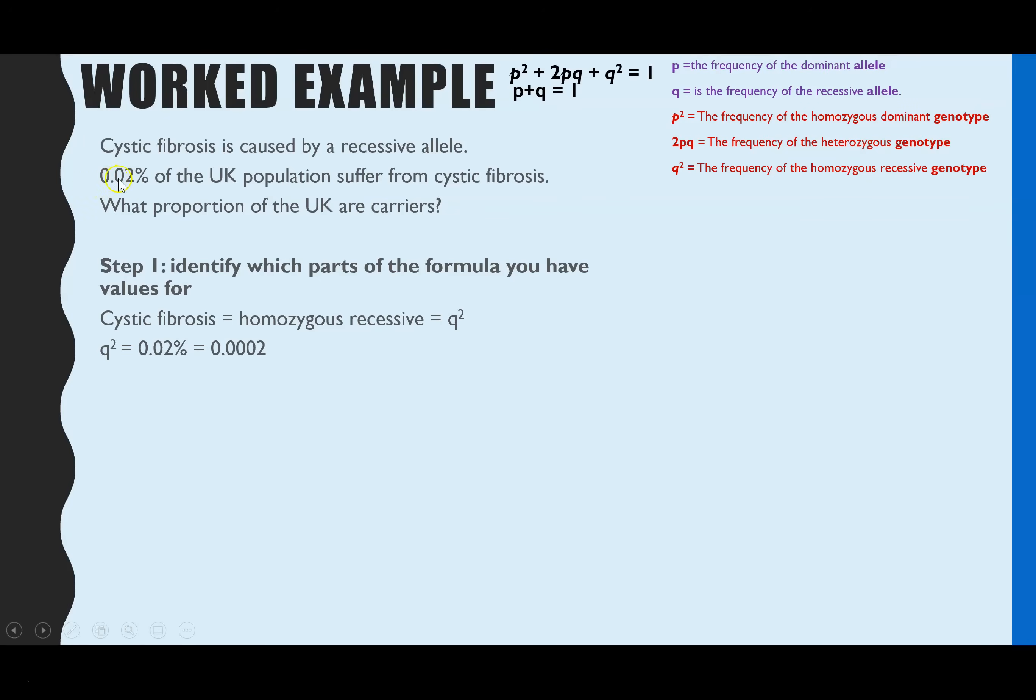What we can then go on to do is use that to work out the rest. But first, if Q squared is 0.02%, we do need to do all of the maths as decimals rather than as the percentage. So I'm just going to convert that straight away into the decimal. Step two is always work out P and Q. We already have Q squared and we can use that to work out Q. Then we can use this formula, P plus Q equals 1, to work out P.